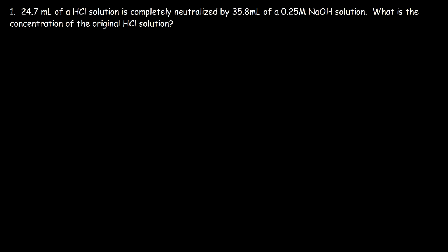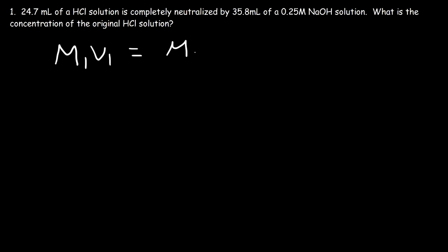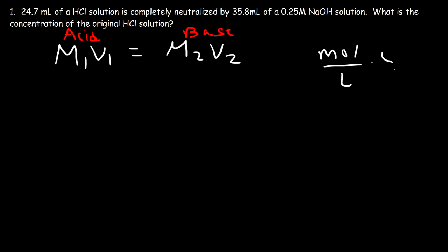Let's use the equation first. The first thing you need to identify is the type of substance. The acid is monoprotic — it only has one hydrogen — and the base only has one hydroxide ion per formula unit. In that case you can use the formula M1V1 = M2V2, where M1V1 corresponds to the acid and M2V2 corresponds to the base. When you multiply molarity (moles per liter) by the volume, the liters cancel and you get moles.